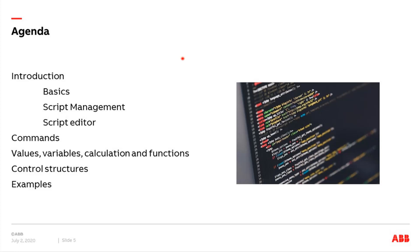Let's have a look at the agenda first of all. We will start with the basics of scripts — how they are set up, where we can create and manage them. Then we will look at what commands are available, which values and functions we can use. After that, we have the control structures, which are very important for creating small programs for the Control Touch. And last, we have some small examples to show you what is possible.